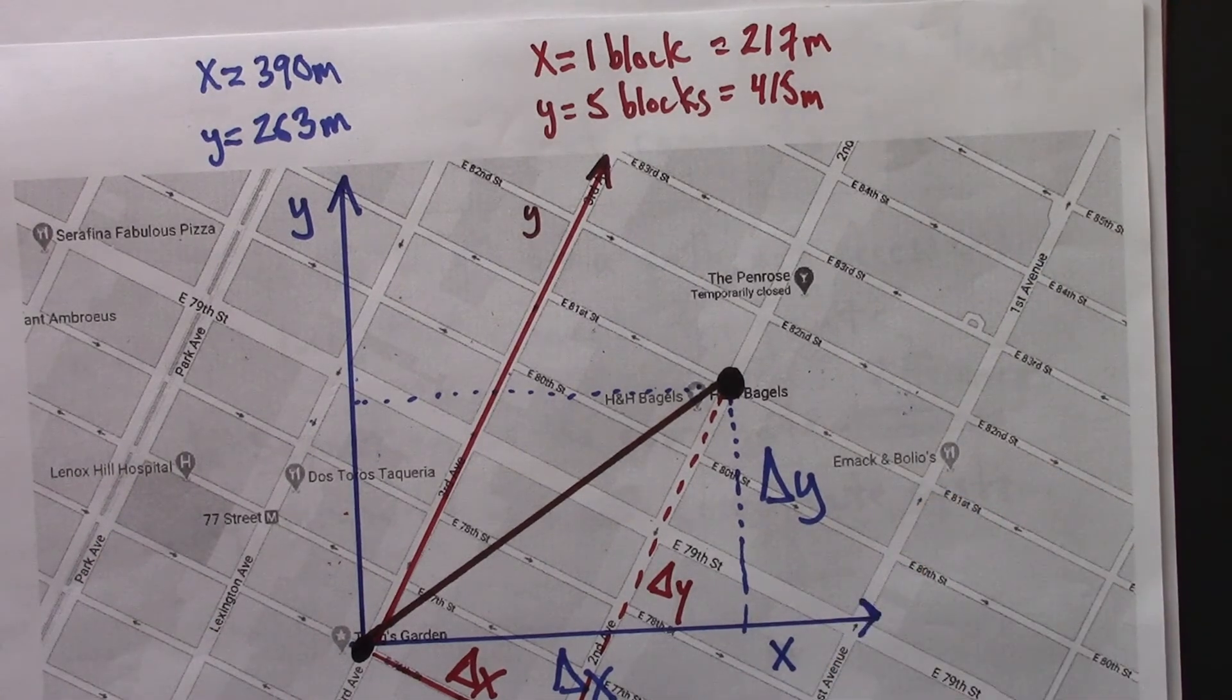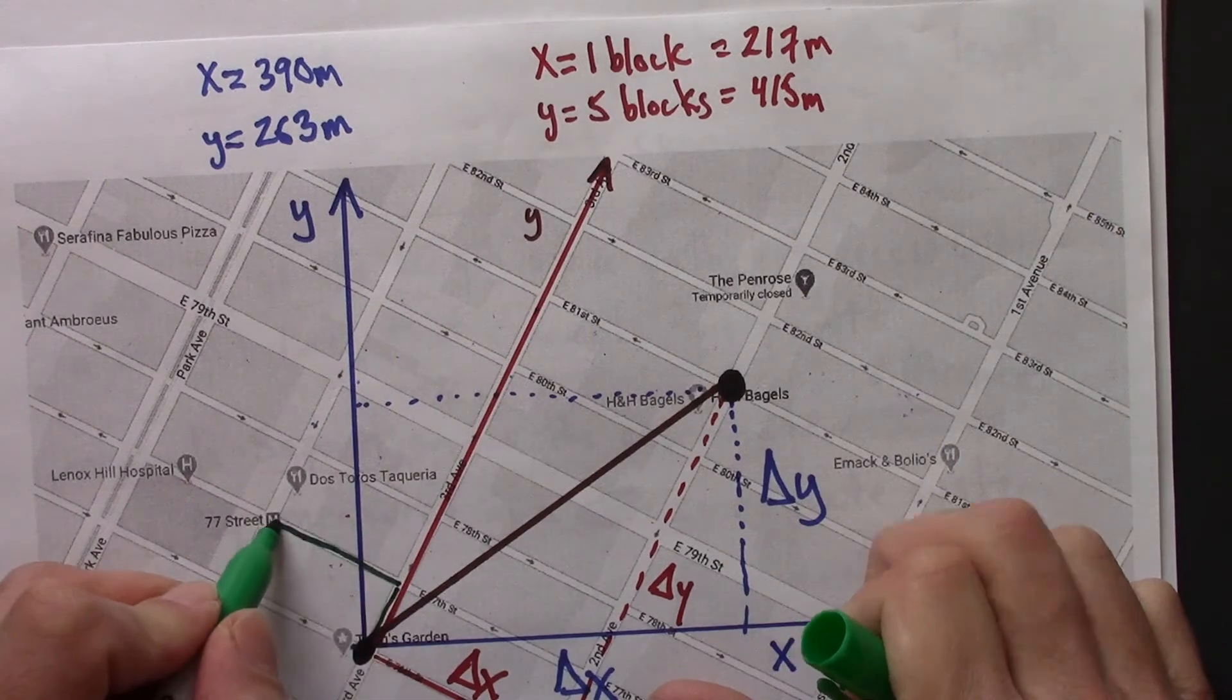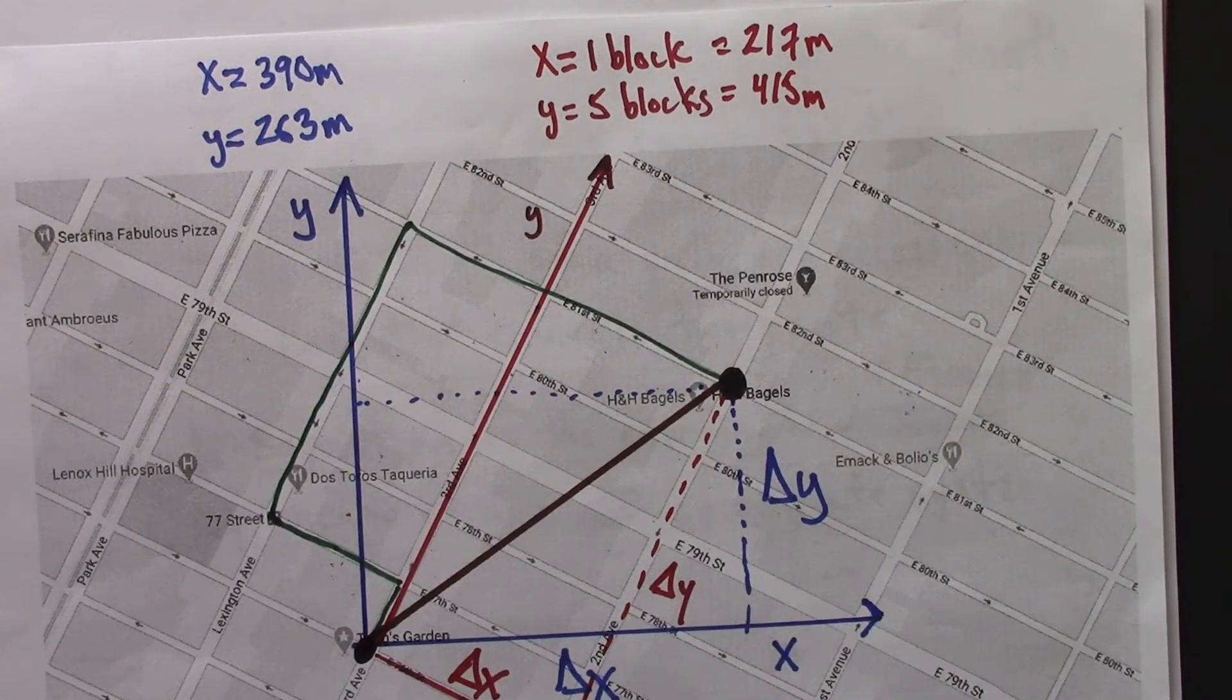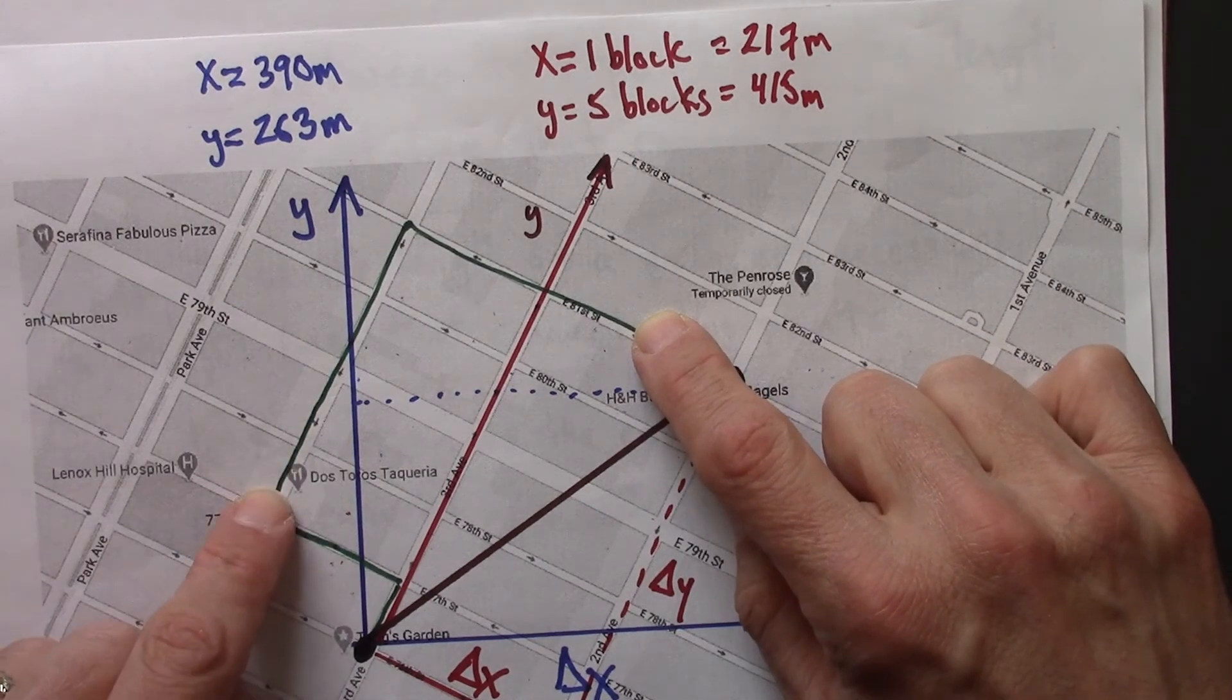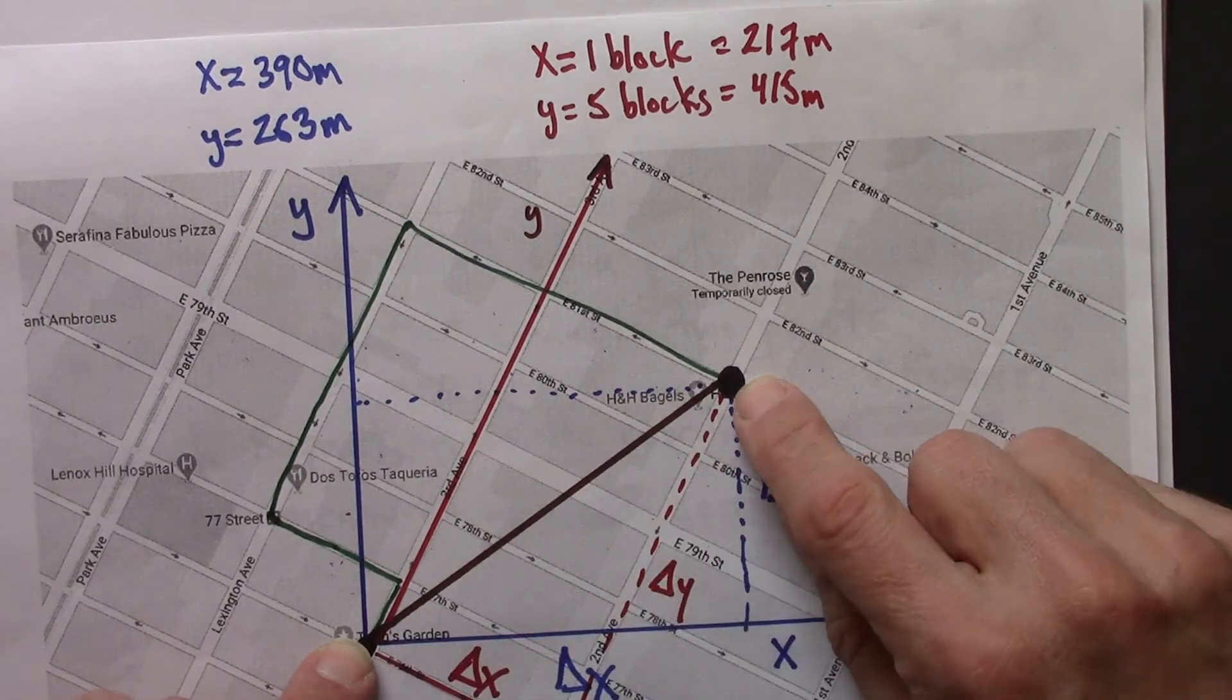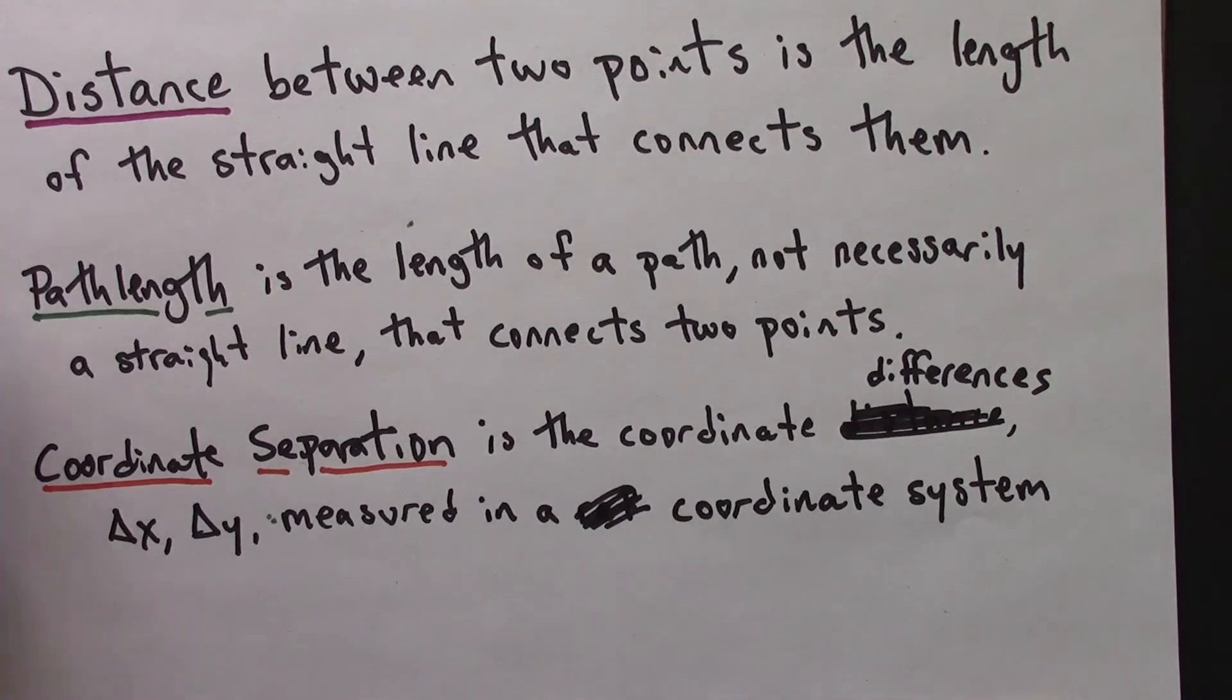And then a path length might be some other way of getting from one point to another. The length of this green line is a path length, but not a distance. This is a path length, a special one, that's the shortest, and that's called the distance. So again, three measures of spatial separation: distance, path length, coordinate separation.